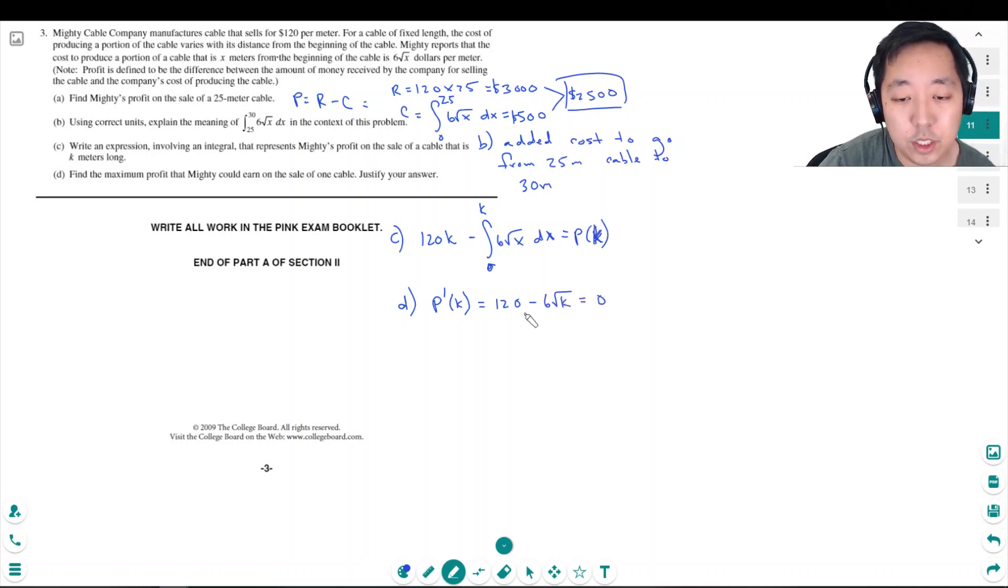That has to equal zero. This should make sense, it's sort of like the rate that I sell it for should be when it is matched by how much it costs, that's when I maximize my profit. Because eventually it's going to start costing more than $120 per meter and after that point I'll start losing money. So I want to find this exact point, so 120 equals 6√k, 20 equals √k, and so k would equal 400.